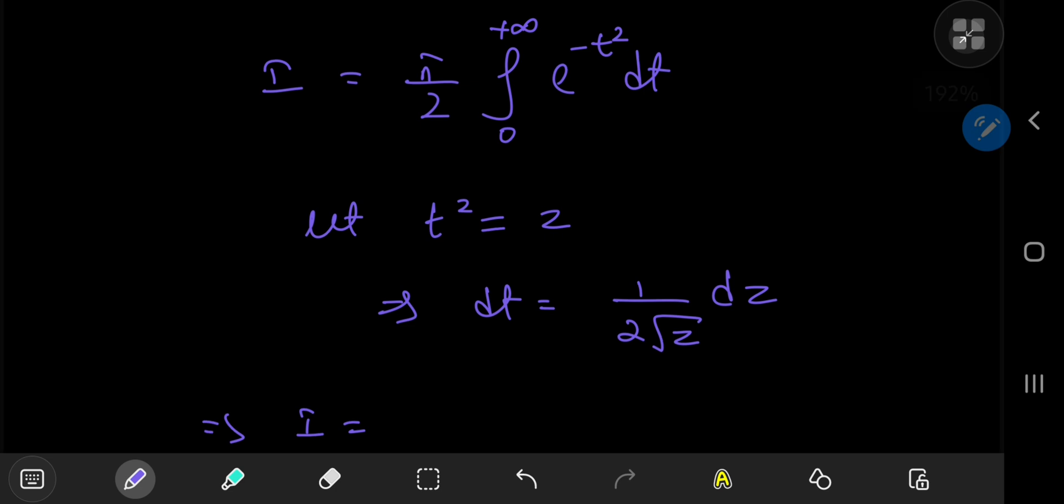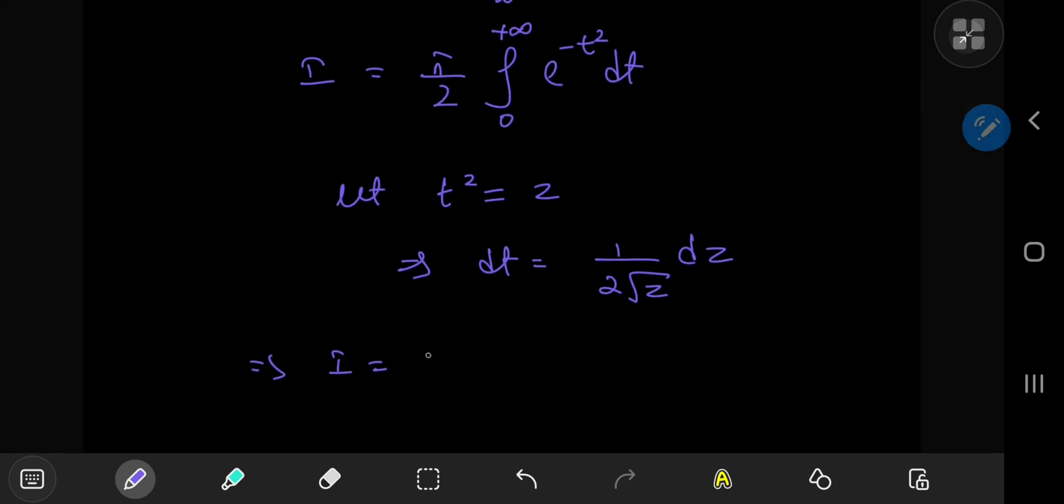So under our transformation from the t world to the z world, we have i being equal to pi by 2 times the integral from 0 to infinity of e to the negative z, and you have this factor 1 by 2 as well because of the differential element.